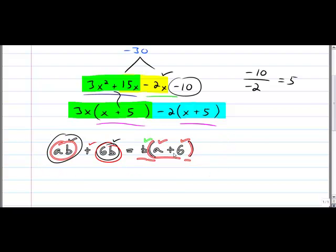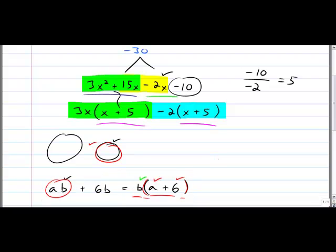So what's common up above? As odd as it seems, this quantity x plus 5 is common. So I'm going to write that down. I'm taking it out, just like down below I took out b. I'm going to take out x plus 5. So I always write down what you take out. Done. Now we've got to write down what's left.